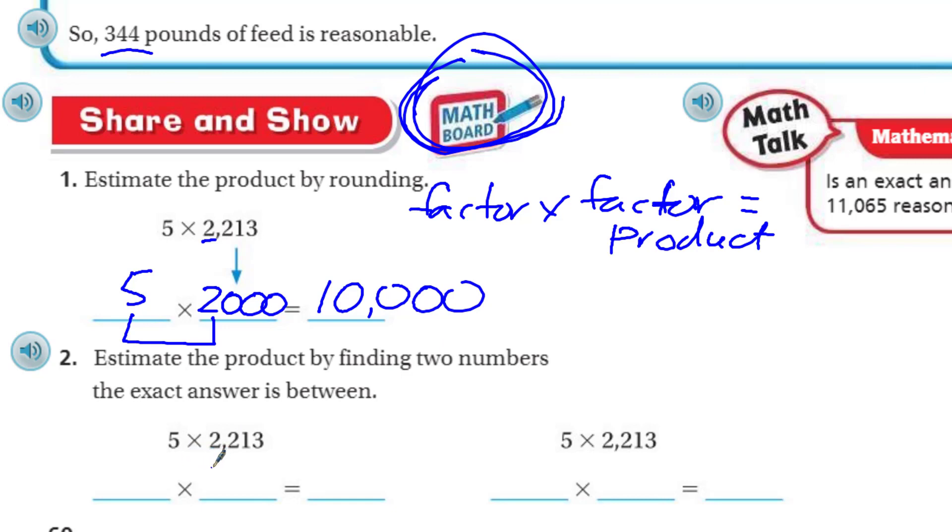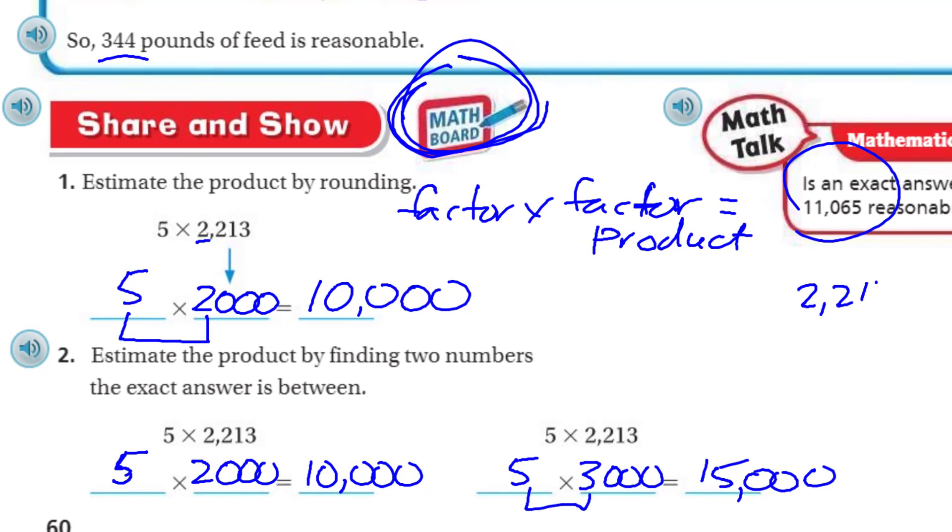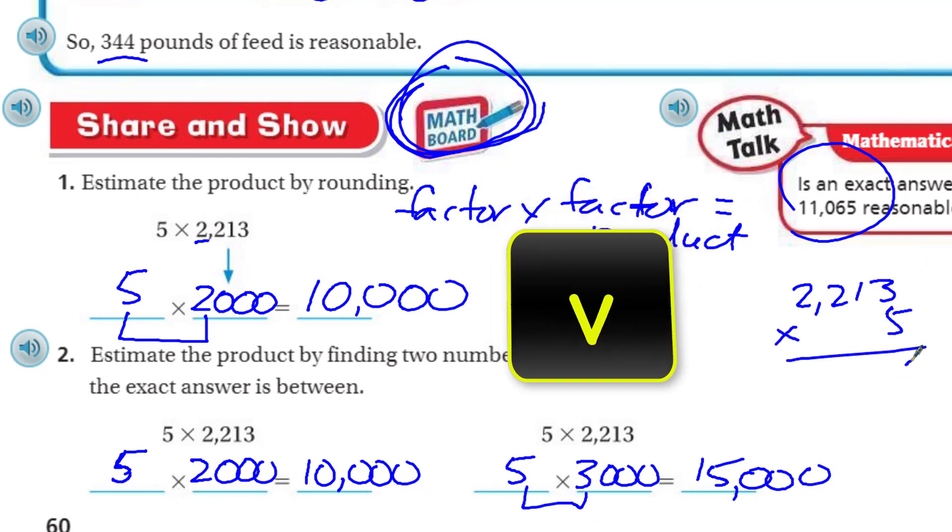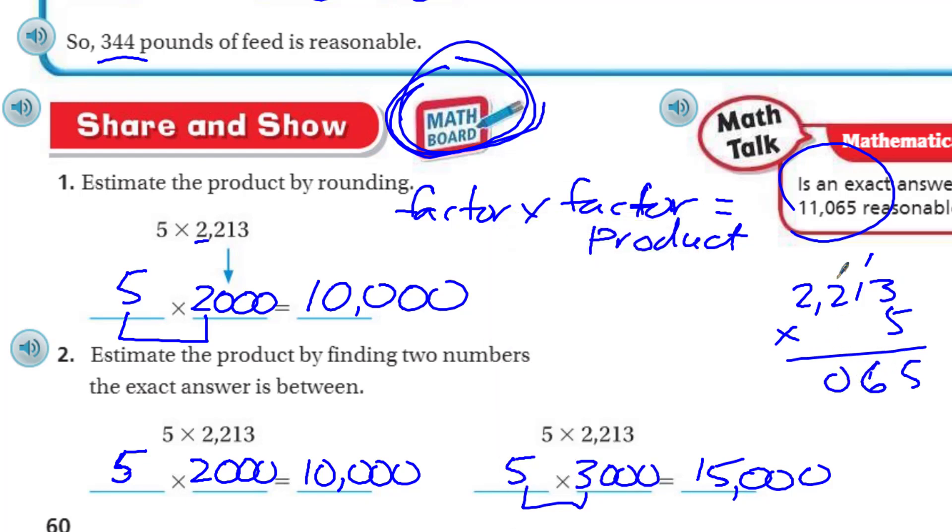Now it says, estimate the product by finding two numbers the exact answer is between. We actually haven't figured out the exact answer. 5 times—we already said that the number has to be between because we said 2,000, so that's equal to 10,000. And over here, it's going to be 5 times—we said 3,000, 2,000 or 3,000. So now we're going to go up. And now our simple fact is 15. We have three zeros, three powers of 10. So now we have 10,000, 15,000. Let's find out. We have 15, carry the 1, that's 5, that's 6. And then we have 10, carry the 1, 10. Yes, that is that answer. Is our answer reasonable? Woo-hoo! Yes, it is. Because look at 10,000 and 15,000. You can see that 11,000 is between those two.